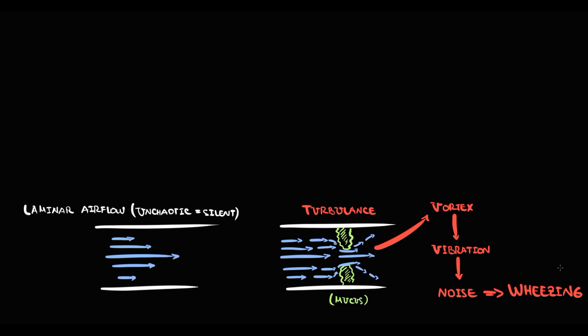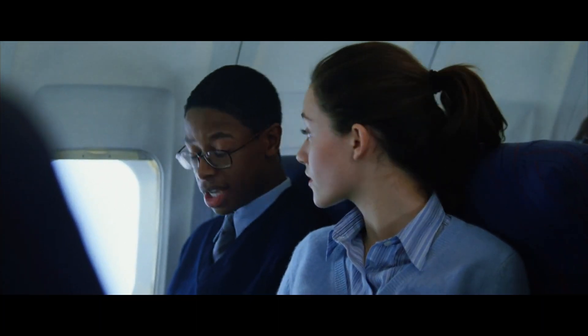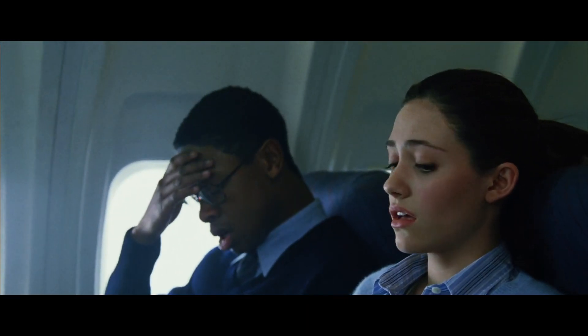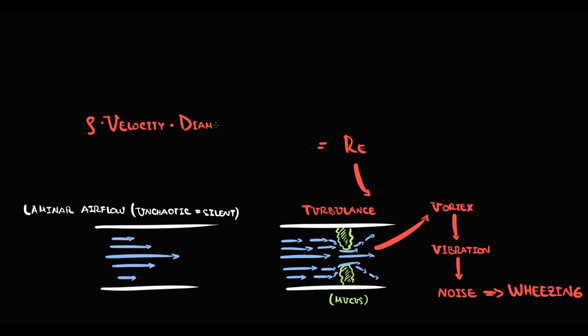The most obvious analogy of such noise is the turbulence in an airplane. So, as we said, wheezing is produced by vortexes, and vortexes are created by turbulence. The most important question is which factors create turbulence. The factors that create turbulence can be described by Reynolds number. Reynolds number is directly proportional to air density, air velocity, and diameter of the airways, and inversely proportional to air viscosity. From all these factors, the most important one is velocity.